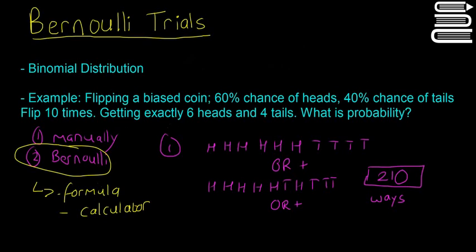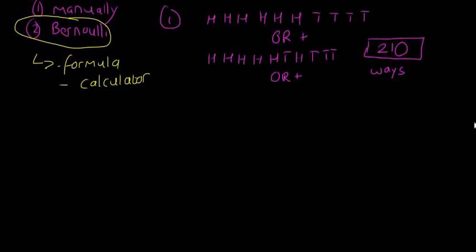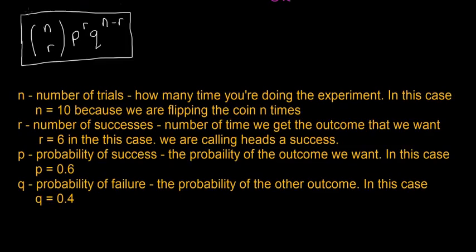So here's the formula and the explanation. So it's n choose r, that's what this kind of bracket thing is called. It's not a fraction, even though it does look a little bit like it. p to the power of r, so it's n choose r times p to the power of r times q to the power of n minus r. So all of these are multiplied by each other.